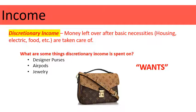Depending on what product a company is selling, that determines whether they're interested in somebody's disposable income or their discretionary income. If we sell Louis Vuitton purses, we really don't care how much disposable income people have — we want to know how much income they have after they've met their basic needs, because the average person isn't going to put their needs aside for a designer purse. Make sure you have a good understanding of the difference between disposable and discretionary income.